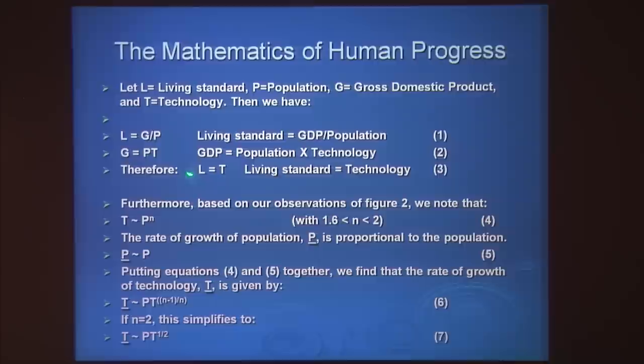Ehrlich and Holdren — currently President Obama's science advisor — are famous for the equation I = PAT: Impact equals Population times Affluence times Technology. So people, affluence, and technology are all labeled as bad. I have a completely different viewpoint. What they call affluence I call living standard — the gross product divided by population. Technology multiplied by population is the gross product. If you do a little algebra, you find affluence equals technology, because the amount of product per person equals productivity per person, on average. They are the same thing.